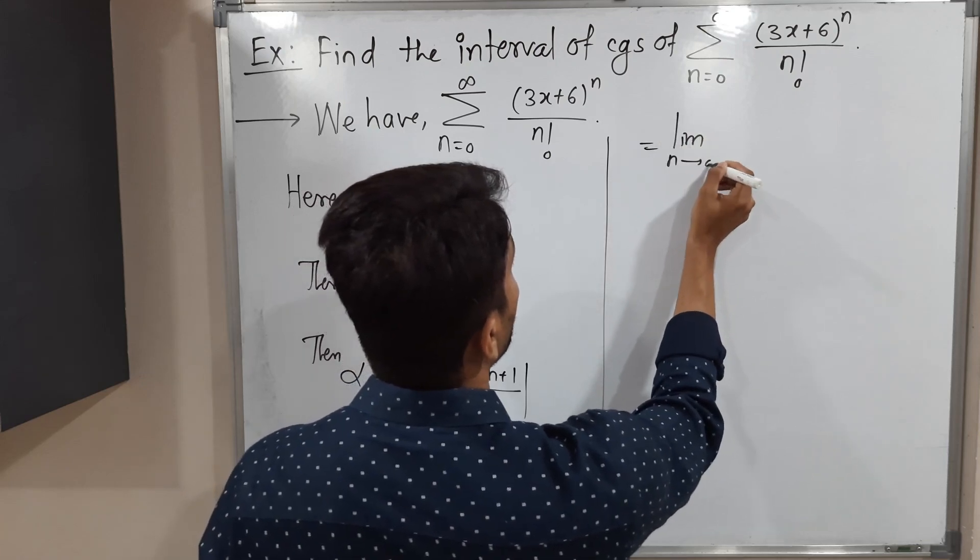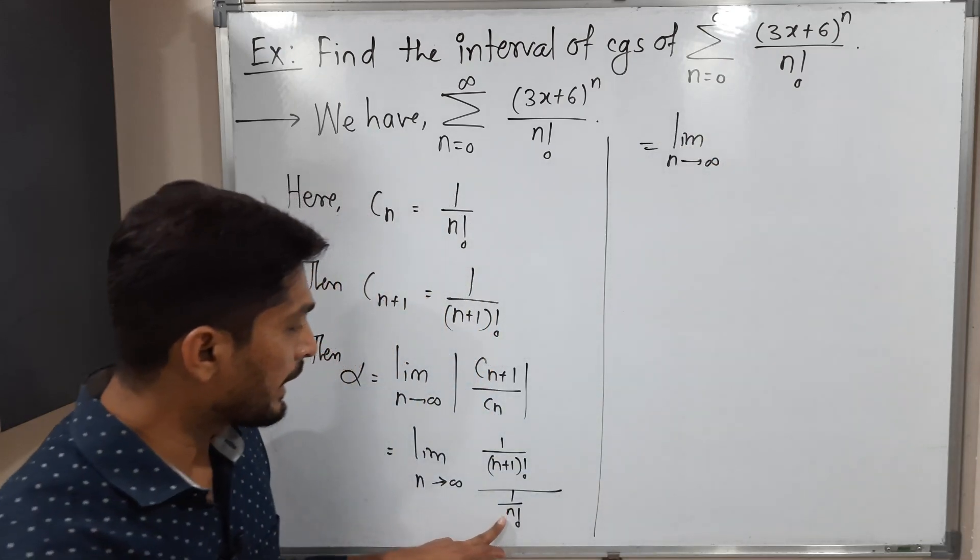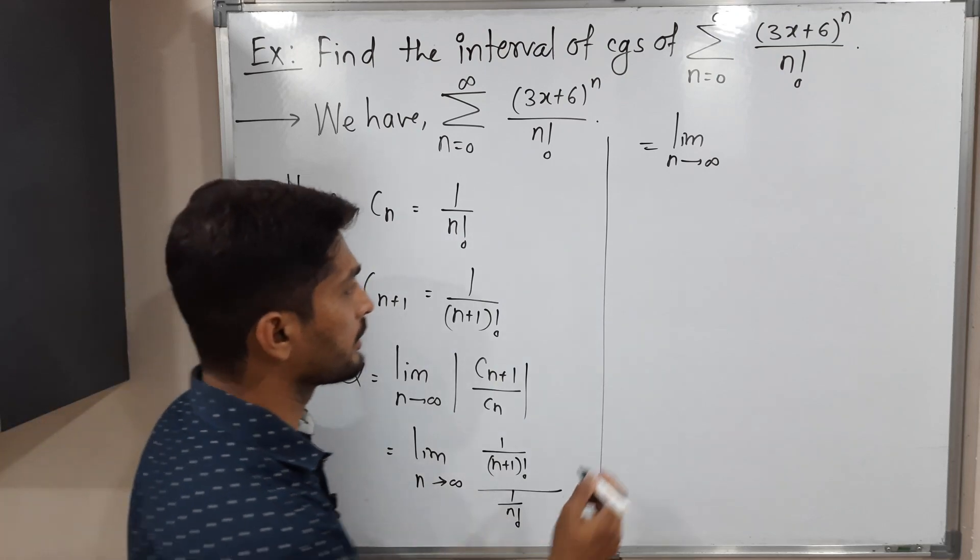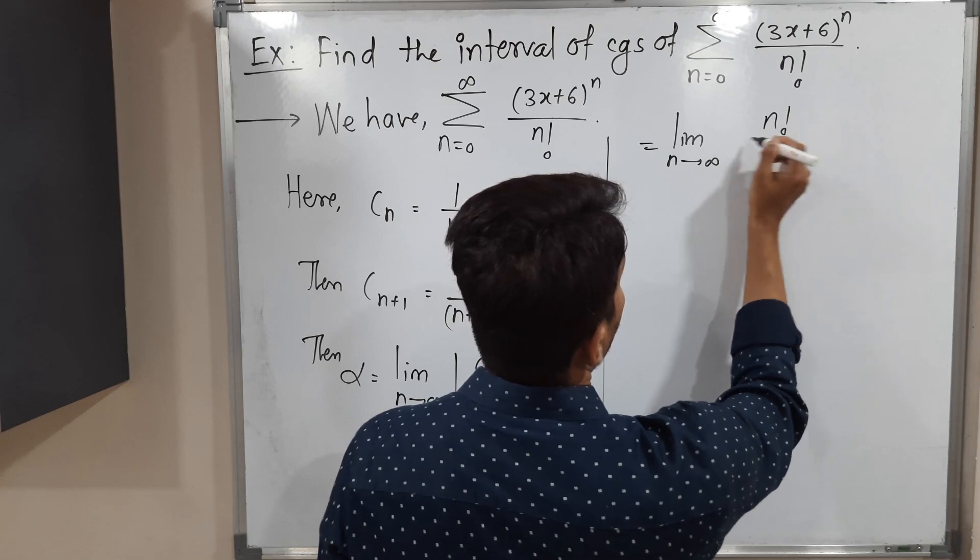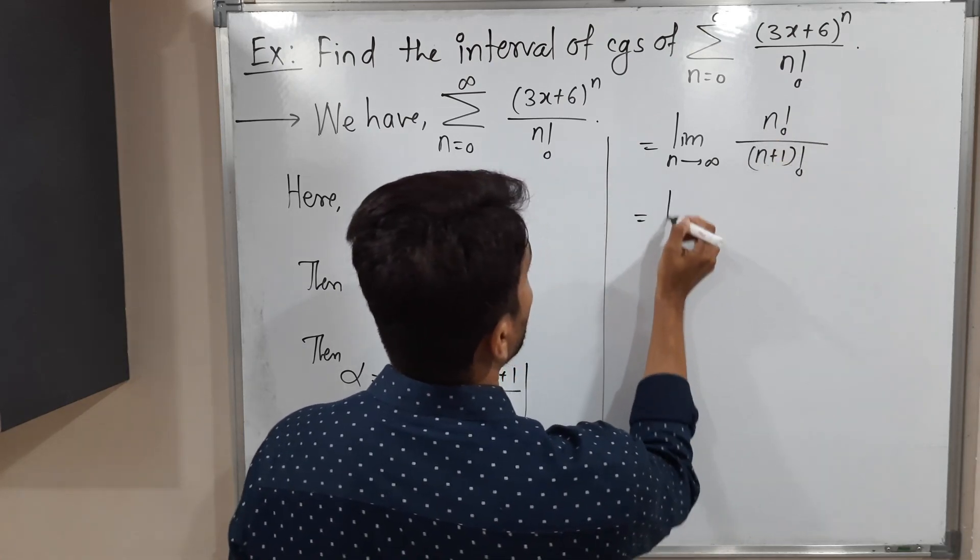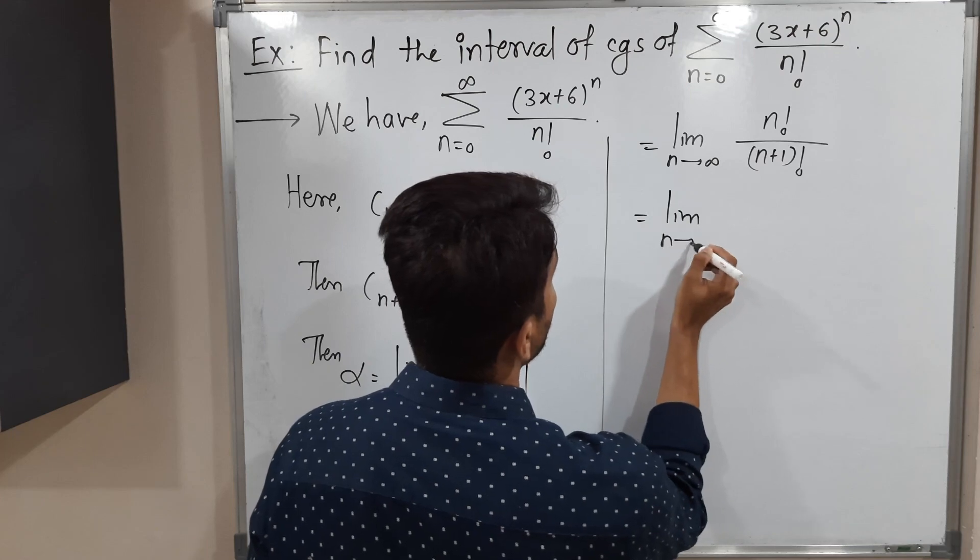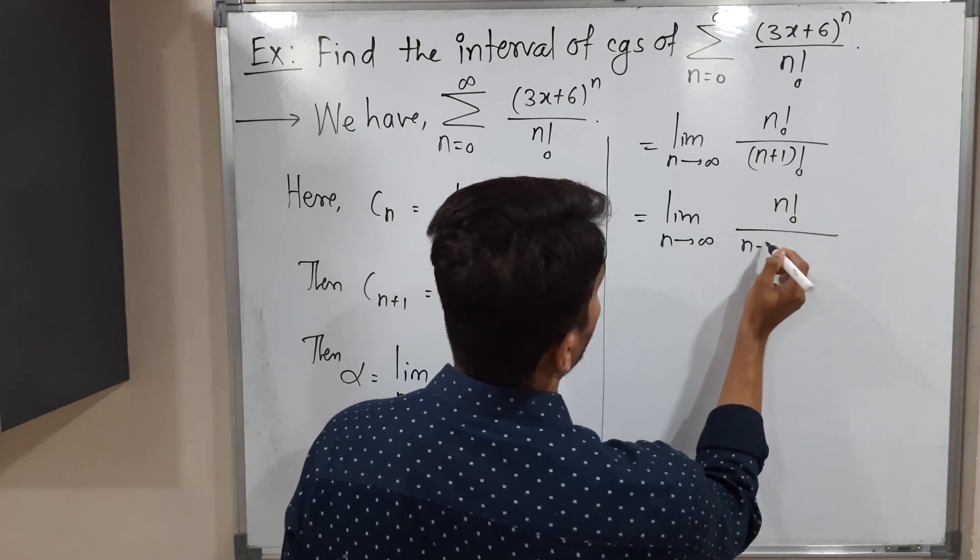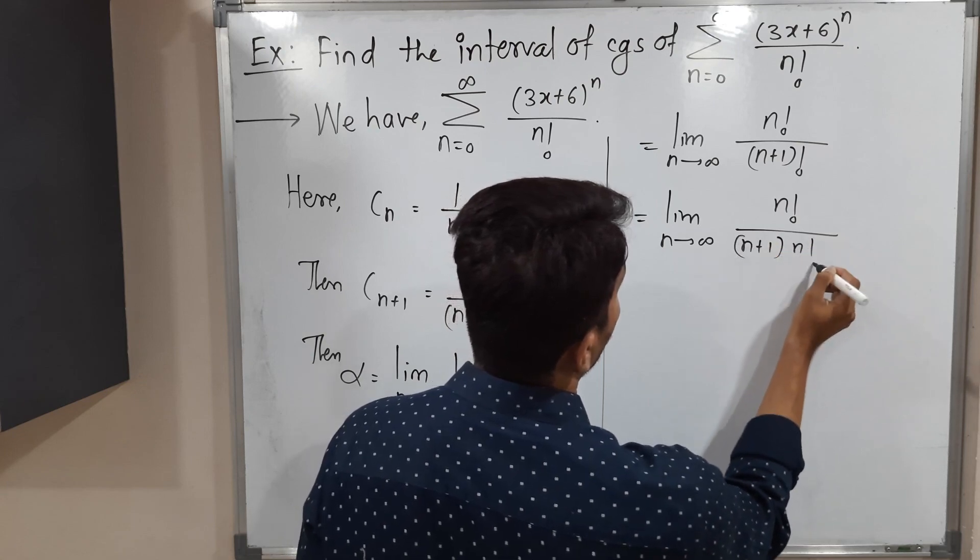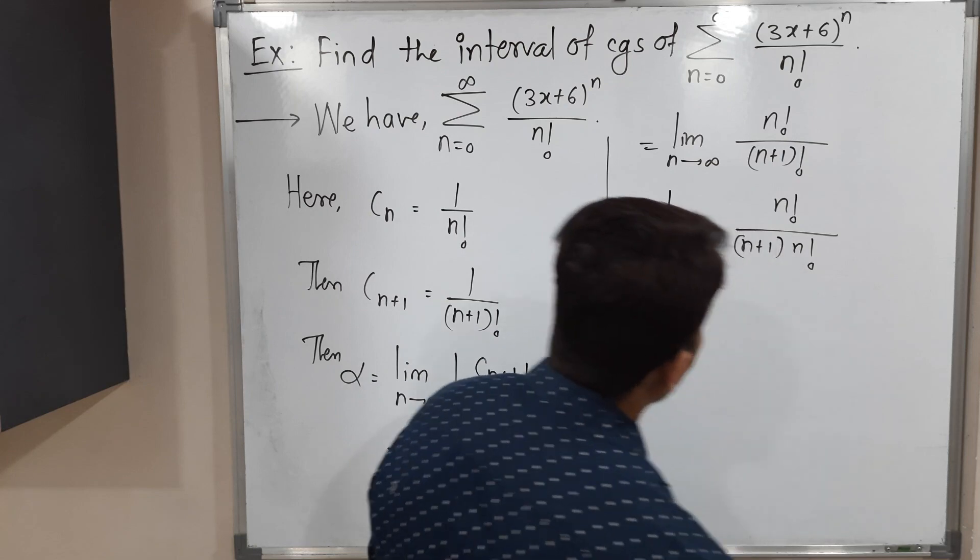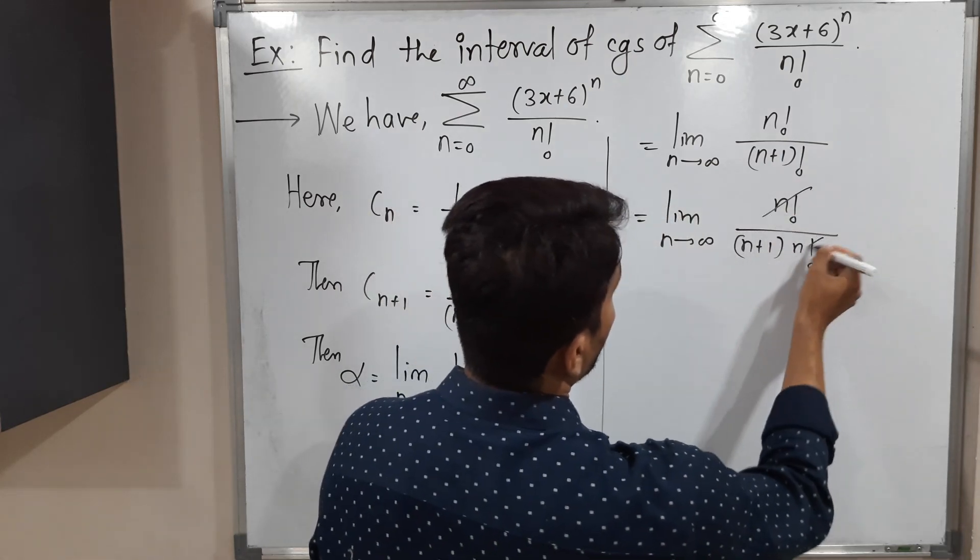Limit n tends to infinity: that n factorial is in the denominator of the denominator, so it will go to the numerator. So n factorial upon n plus 1 factorial. So limit n tends to infinity n factorial over n plus 1 factorial is nothing but n plus 1 into n factorial.